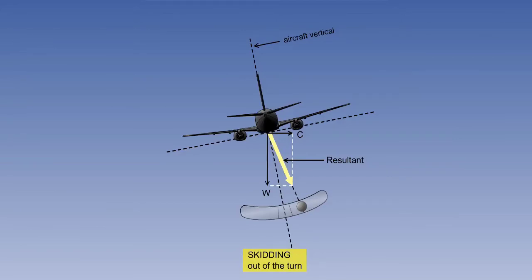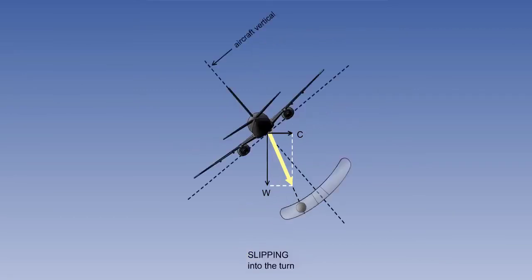Let us suppose now that the angle of bank is too great for the rate of turn. The aircraft will slip into the turn, and the indication on the slip indicator will be that the ball has been displaced away from the aircraft vertical, this time towards the centre of the turn. We can say therefore that a slipping turn results from too much bank, and the ball will appear to move in the same direction as the turn.